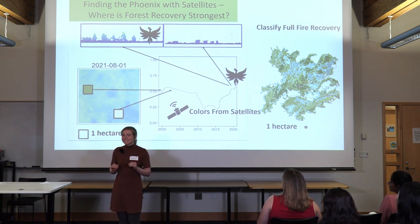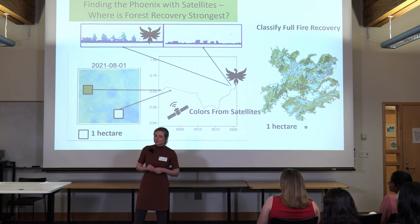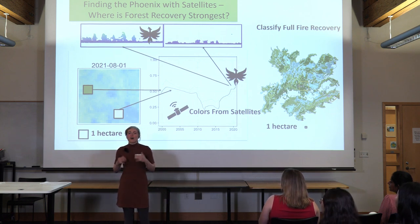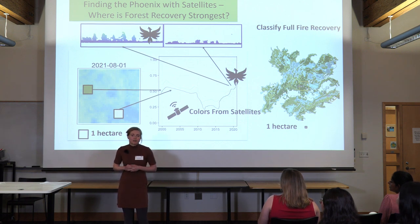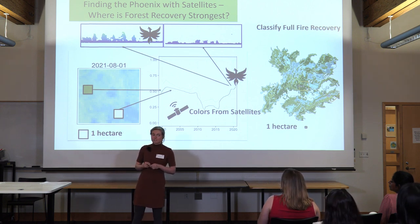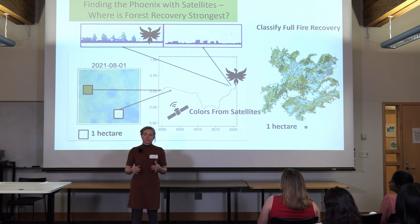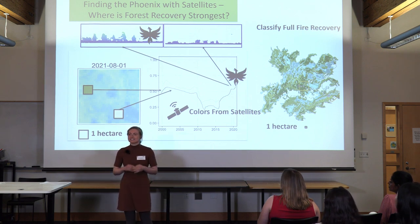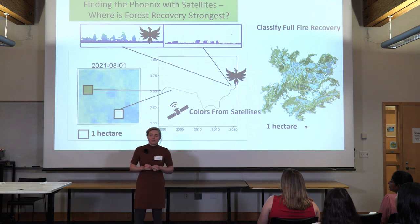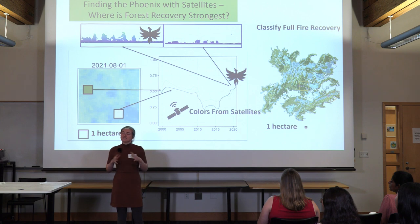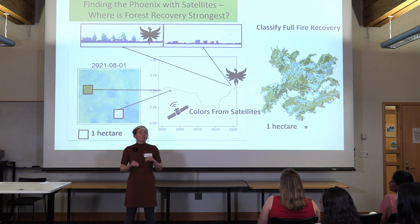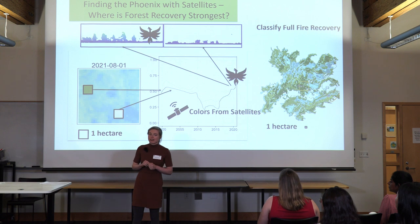Previously, assessing the connection between structures and the colors measured from Landsat was impossible. You need continuous measures over large areas comparable to Landsat's 25 by 25 meter pixel. New technologies like remotely piloted aircraft can now capture forest structure at centimeter resolutions over hectares and hectares, bridging the gap we previously had. In my research, I connect these continuous measurements of forest structure to the colors that might be seen by a Landsat satellite.